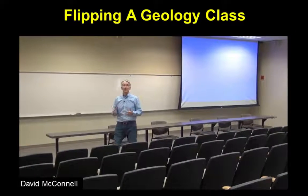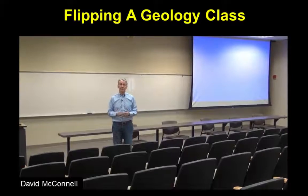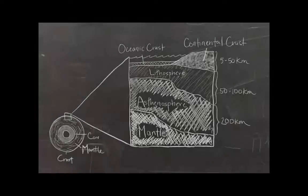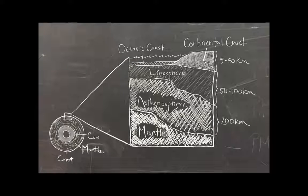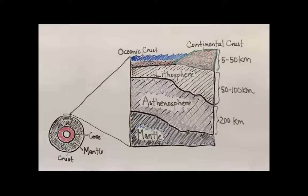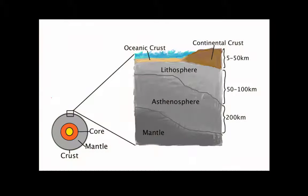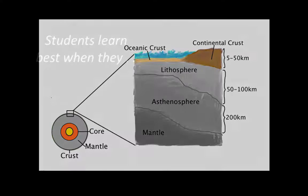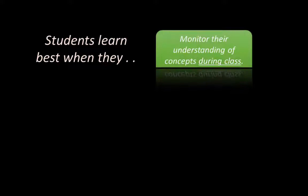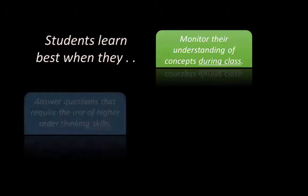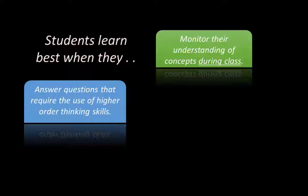Specifically, we want to talk to you a little bit about flipping the class. The way we have taught students in college classes has remained relatively consistent over time, regardless of whether we're using a chalkboard, whiteboard, or PowerPoint. Most lessons revolve around the delivery of information, but are we delivering this information in the most effective way to help students learn? Research tells us that students learn better when they have opportunities to actively monitor their understanding with a variety of activities during class, and that these activities should include questions that require the use of higher-order thinking skills.